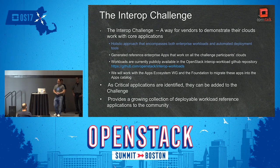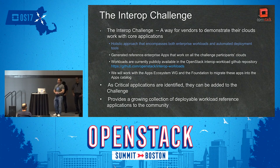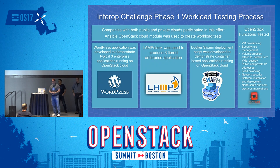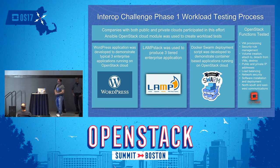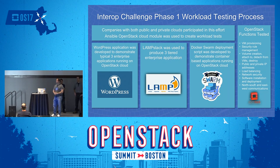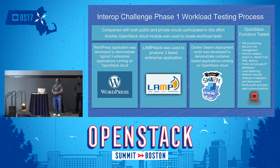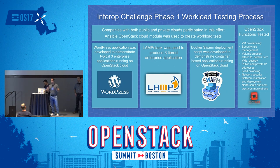We were starting to work with the App Ecosystem Workgroup. As we had challenges identified and found other people that wanted to participate, we included them. We looked at Docker Swarm and LampStack — some nice applications — and hit a lot of bumps. The key RefStack capabilities we wanted to retest included VM provisioning, security rule management, volume creation, attaching and detaching, public and private IP addresses, load balancing, network security rules, and software install on top of OpenStack.